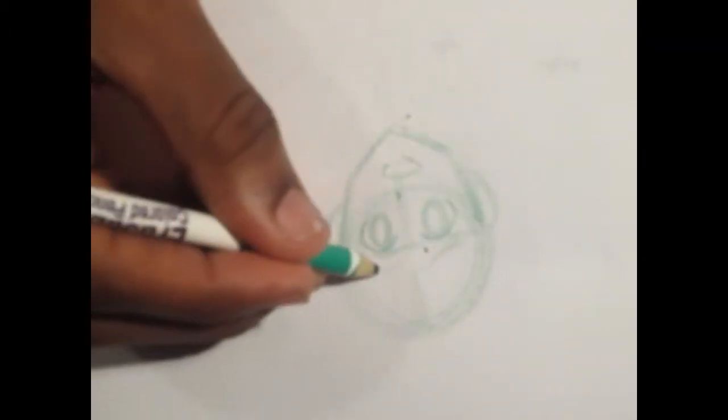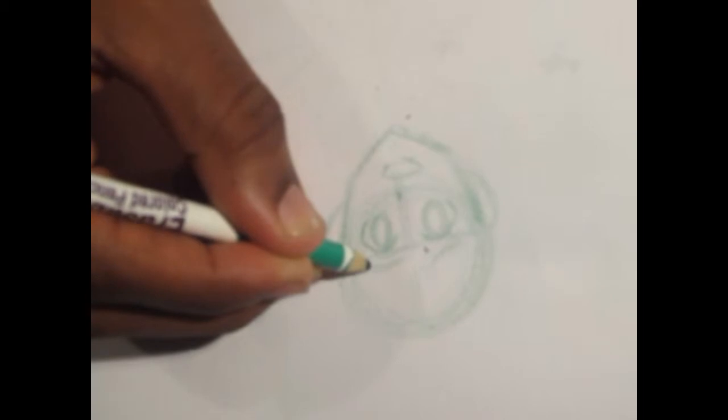Let me redo those eyebrows. Add some emotion to this character. One eyebrow up, one eyebrow down. It's a good confused face. It's good too, because the character's going to be confused by the time I get done. Especially with his hair.